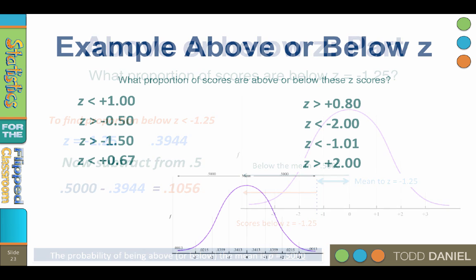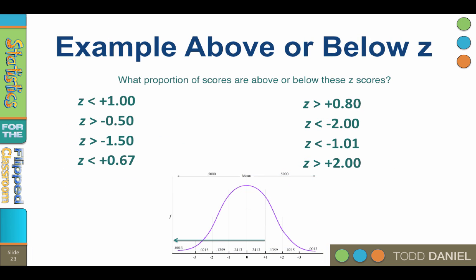Using what we know, let's find the proportion of scores above or below these z-scores. For each of these examples, it might help to draw a normal curve to see what part you're trying to find. In this case, I will show you the proportion on the normal curve below. As in the previous examples, I will ask the question and then provide the answer. You should pause the video while you work on the example on your own.